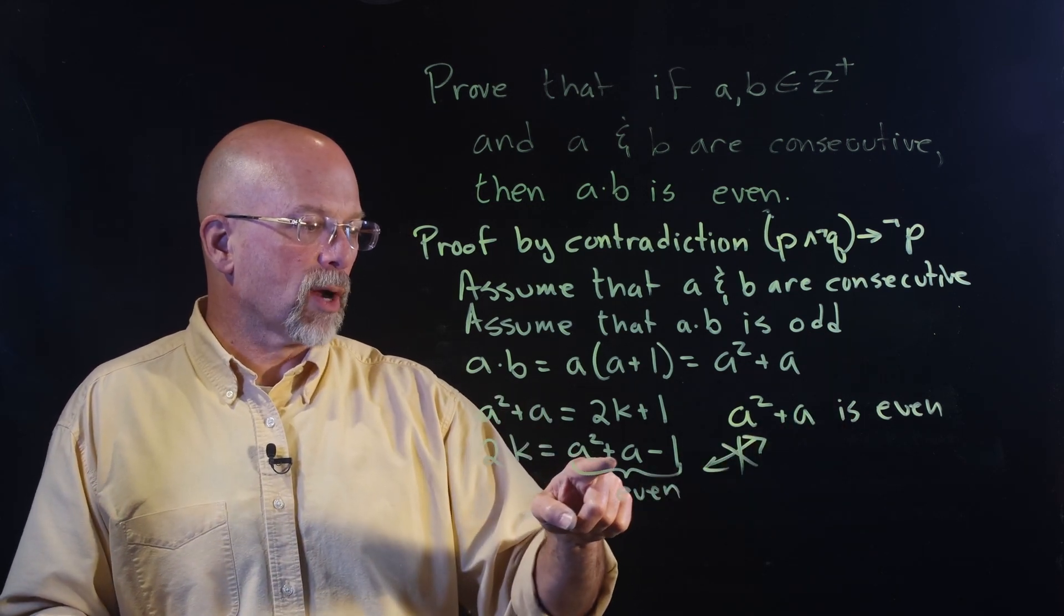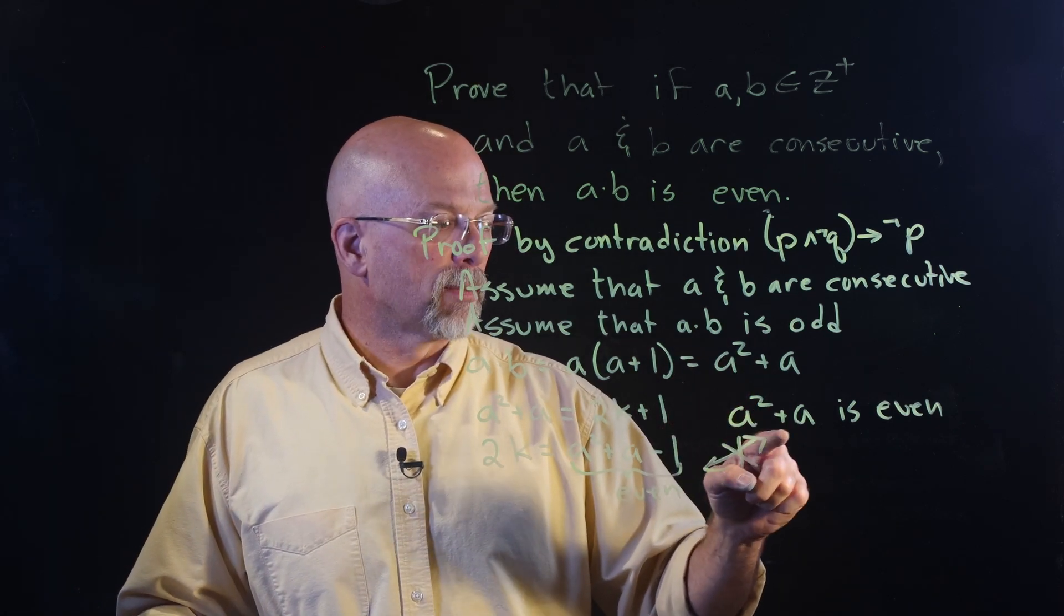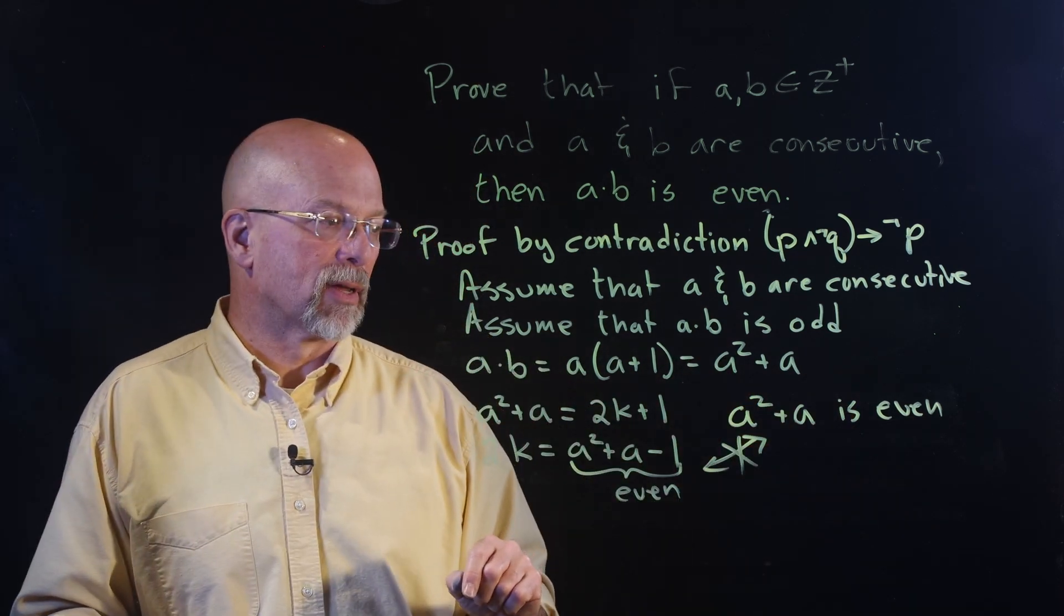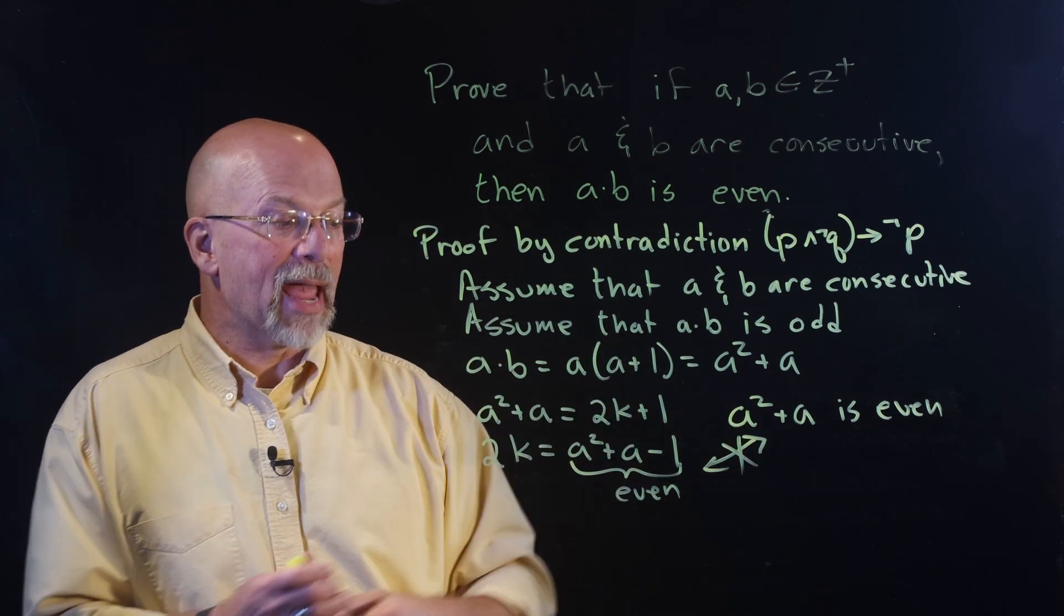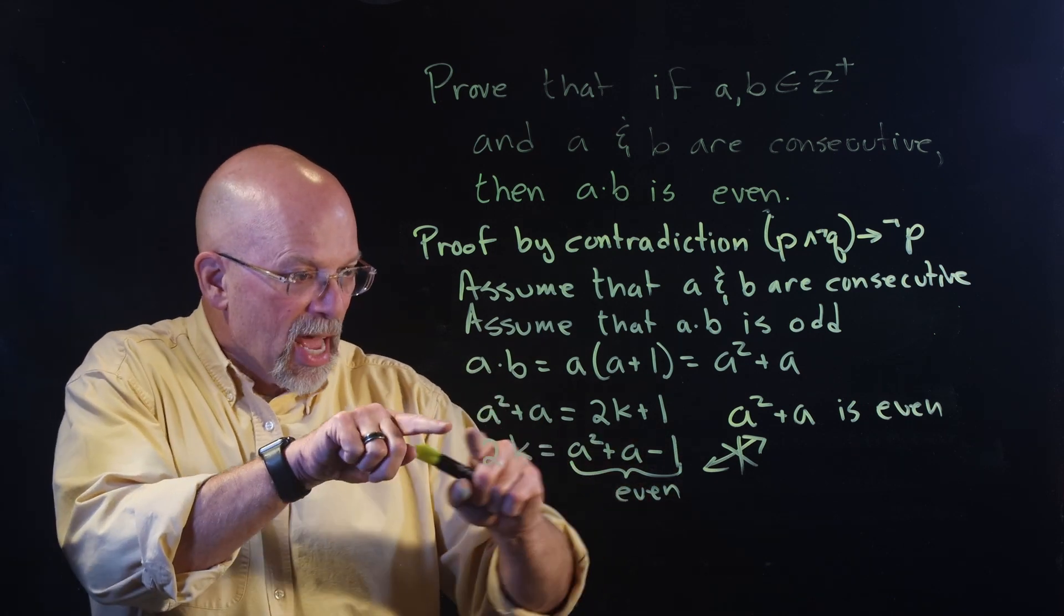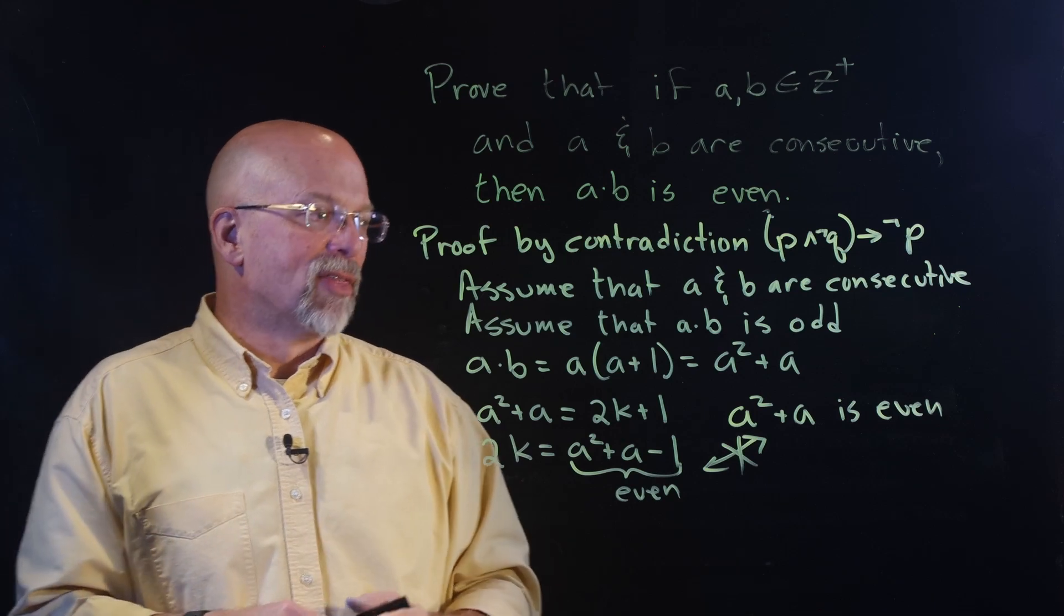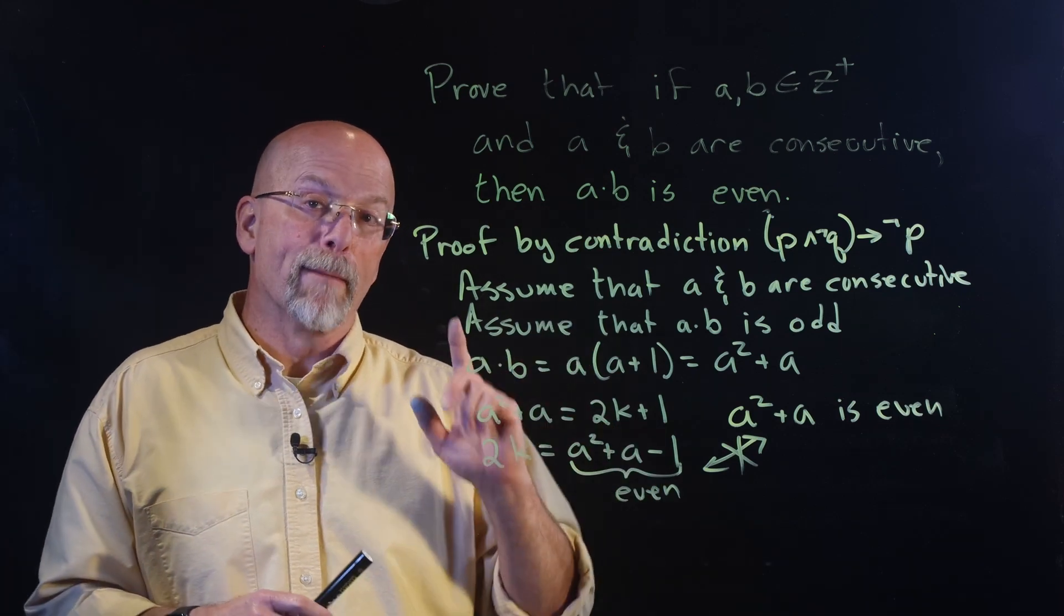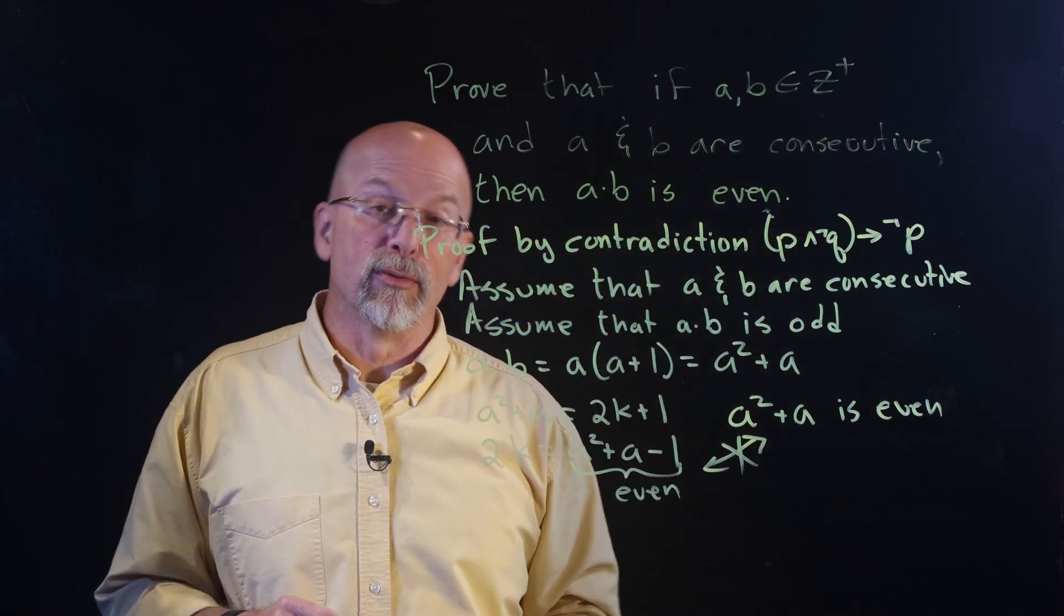Which means that since a squared plus a minus one is also being asked to be even, we know that that won't work. There's our contradiction right there. We're asking a squared plus a minus one to be even, and a squared plus a also to be even. We know that a squared plus a is even, so this can't possibly be true. And since this is a contradiction, and since we know that we made proper steps through here, that means that our assumptions must be incorrect. And therefore, this has been proved true.